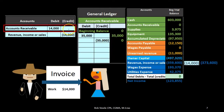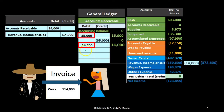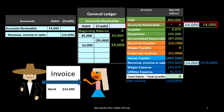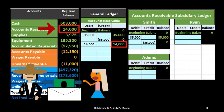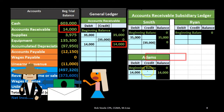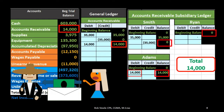Then we post the receivable to the general ledger — a debit of $14,000 bringing the accounts receivable GL balance up to $14,000, which can be calculated as the prior zero balance plus the $14,000 debit, or as total debits of $35,000 plus $14,000 minus credits of $35,000. The trial balance for accounts receivable also goes up to $14,000. We then post that same $14,000 to the subsidiary ledger by customer — in this case Adams — bringing Adams's balance to $14,000, with the subsidiary ledger tying out to the general ledger and the trial balance.